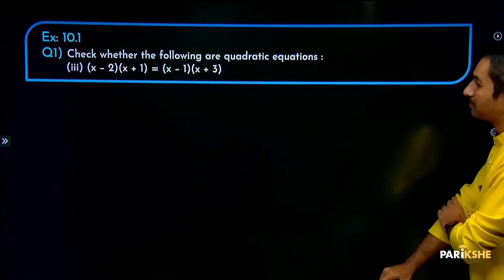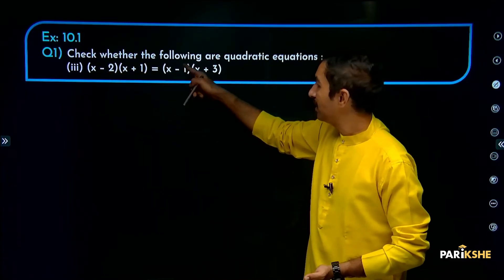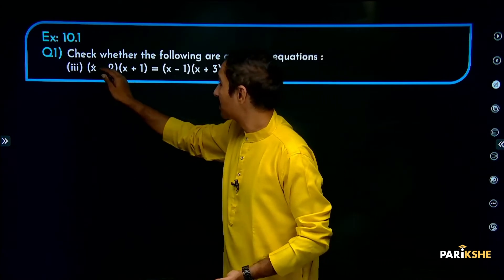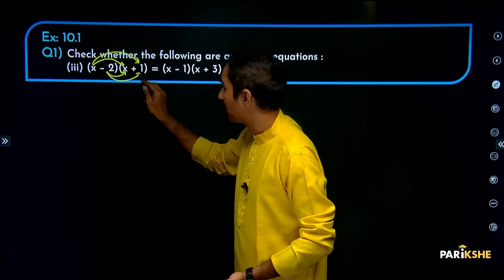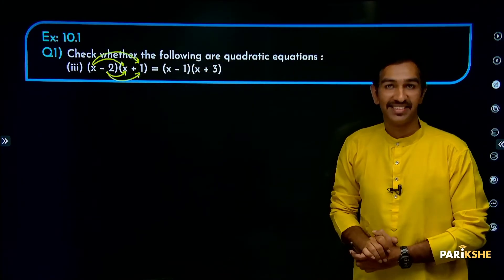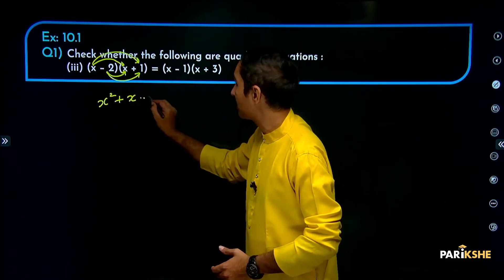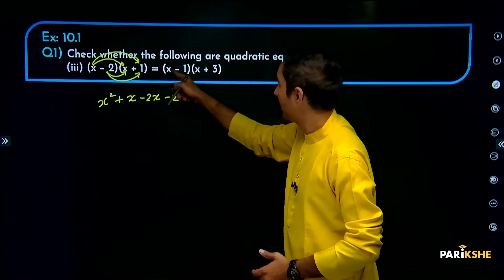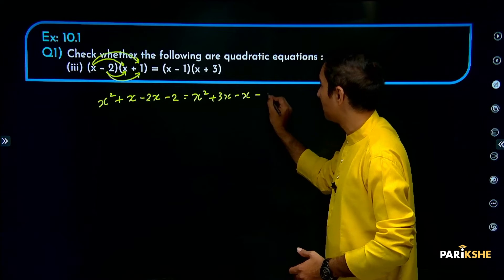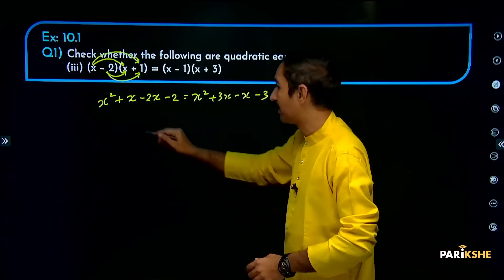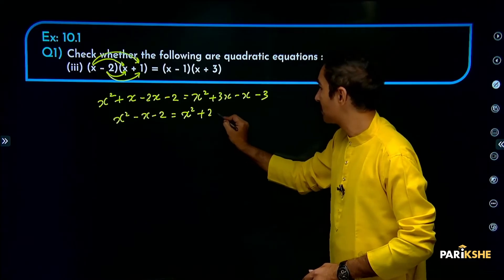Next question: check whether x minus 2 of x plus 1 equals x minus 1 of x plus 3 is quadratic. Expanding the left side: x into x = x squared, x into 1 = x, minus 2 into x = minus 2x, minus 2 into 1 = minus 2. Expanding the right side: x into x = x squared, x into 3 = plus 3x, minus 1 into x = minus x, minus 1 into 3 = minus 3.